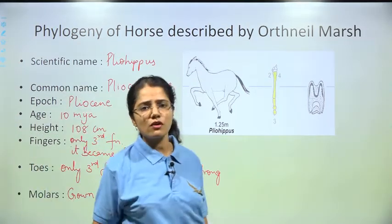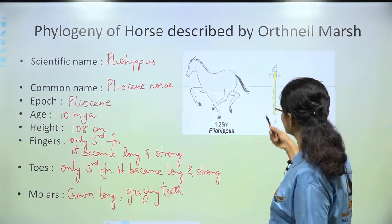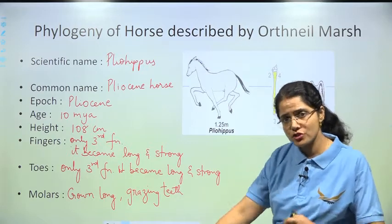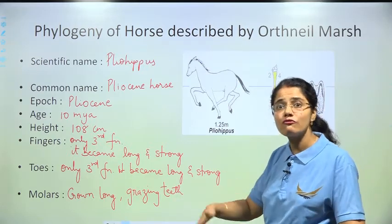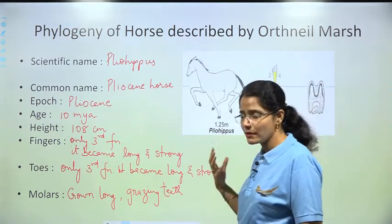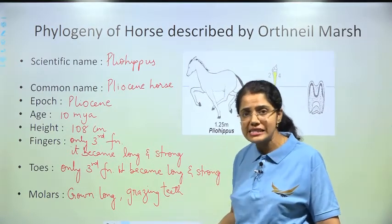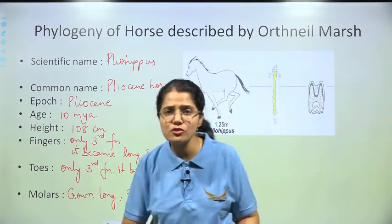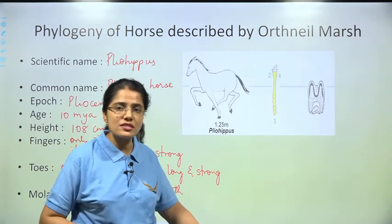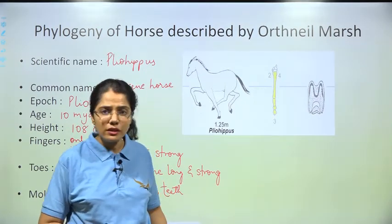So this was Pliohippus. Slowly and steadily, as the other digits reduced, the central third finger bone became longer and stronger, helping the horse become a fast runner.